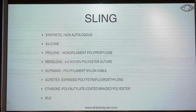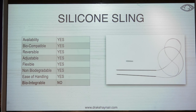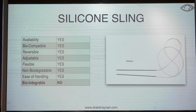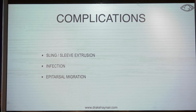Of all the materials commonly used, the most important is silicone. Going back to that checklist, apart from not being bio-integrable — which is actually a good thing for silicone — it ticks all the boxes. It is usually available swaged on a needle, or with two needles and a silicone sleeve. The most common indications are severe ptosis with poor levator function, and Marcus Gunn jaw-winking phenomenon. Common complications include sling or sleeve extrusion with wound site infection, and epitarsal migration where the sling slips from the tarsus into the supratarsal space.